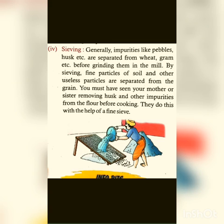चलनी देखियो — जब आटा आता है तो direct उससे रोटी नहीं बनाते हैं। पहले उस आटे में जो impurities होती हैं उन्हें हटाने के लिए चलनी से उस गेहूं को चाला जाता है, उसके बाद इससे रोटियां बनाई जाती हैं। Sieving में यह होता है कि चीज़ों को सबसे पहले चलनी से छाना जाता है, जिससे main particle नीचे चला जाए और जो dust या waste particles हैं वो चलनी के ऊपर रह जाएं।